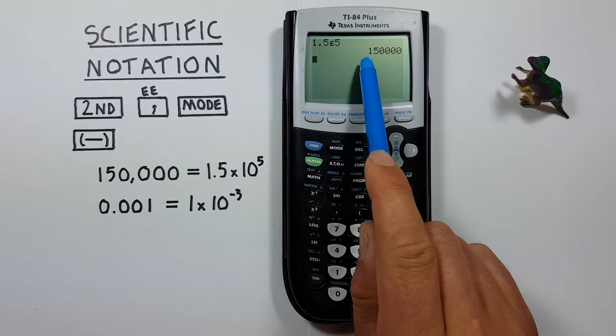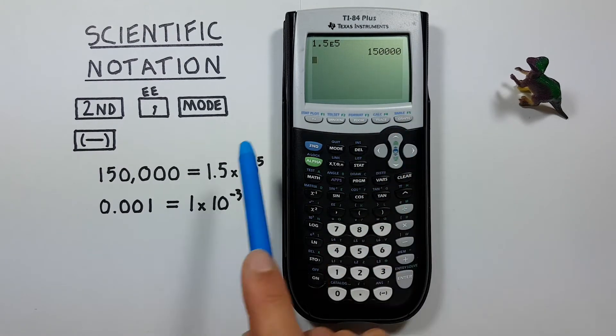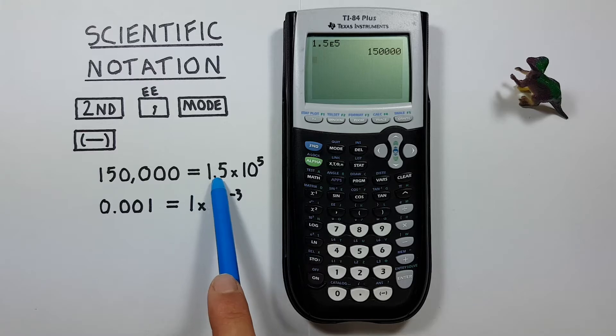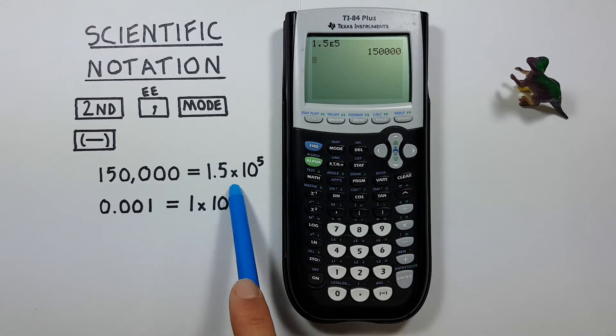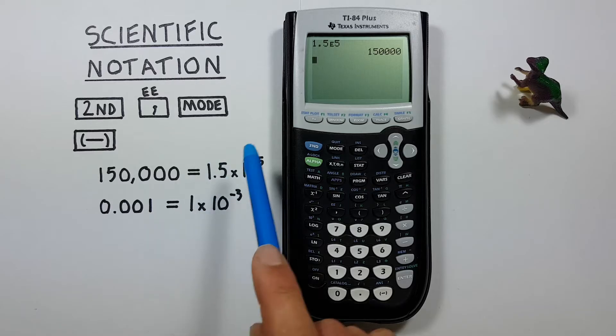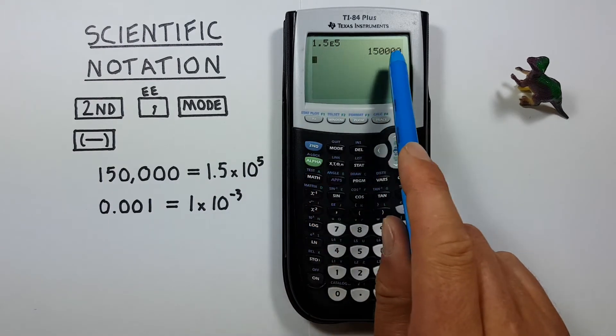And we see we've entered 150,000. So if we're given say 1.5 times 10 to the power of 5 and want to determine what that is out of scientific notation, we can enter that on our calculator and press enter.